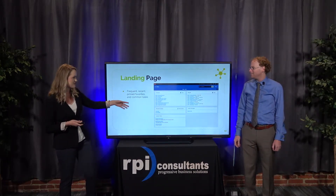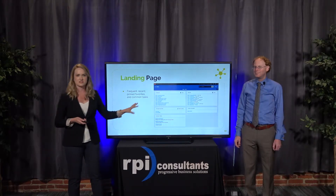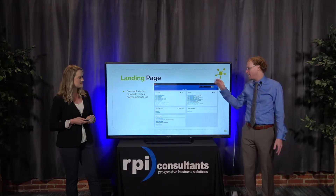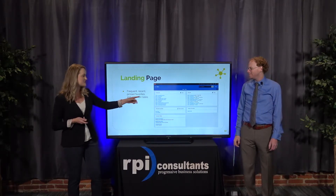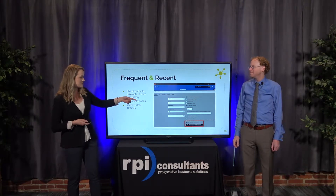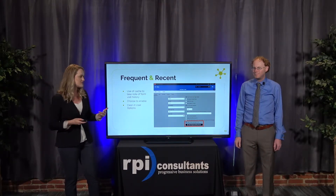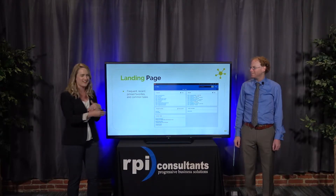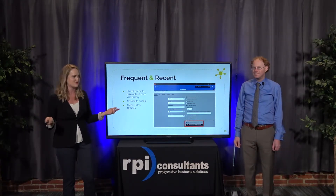The landing page has your pinned favorites, your frequent and recent — which I'll talk about shortly — your common tasks, everything in a nice little landing page dashboard. Rather than seeing a blank screen and then having to enter in a screen code, you've got a list of different screens you work in frequently and it's easy to just click one and get there. It's going to be super quick, especially those frequent and recent ones. It uses your cache — you enable it in user options so that the cache remembers where you've been, and it even tells you the last time you were in a screen. You can also clear it the same way you'd clear your cache in your browser.